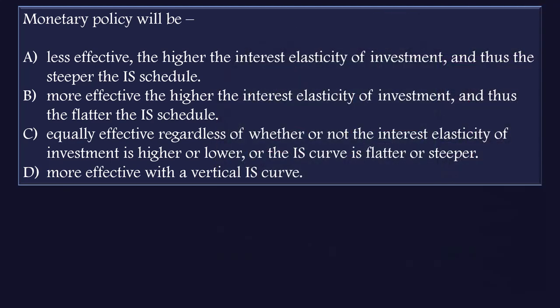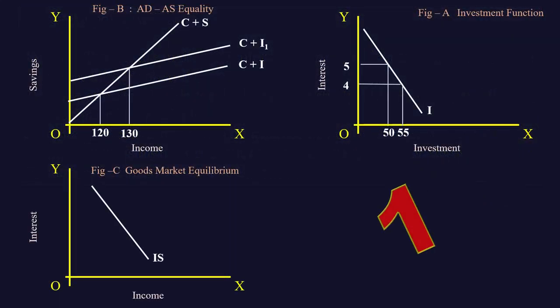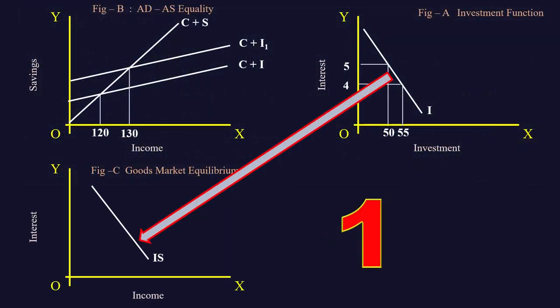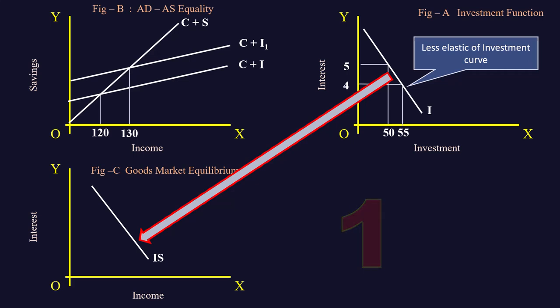To tackle this question, we must be clear about two things. Number 1: There is dependency between the elasticity of investment curve and the elasticity of IS curve. Figure A shows relatively less elastic investment curve. It also shows a negative relation between interest and investment. Figure C shows less elastic IS curve.